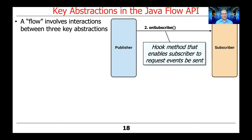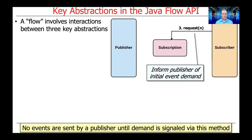Once the publisher is about to begin sending information, it calls back the on-subscribe method to the subscriber, which enables the subscriber to request how many events should be sent. You can request various numbers — you can say you only want n events, where n is small like 3, 5, or 10. You could also say you want an unlimited number of events, in which case the publisher will just start pumping them as quickly as it can. Note that no events are actually sent by a publisher until the subscriber indicates demand by calling the request method.